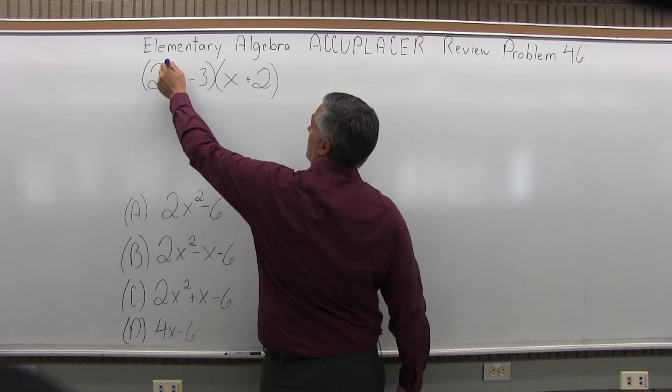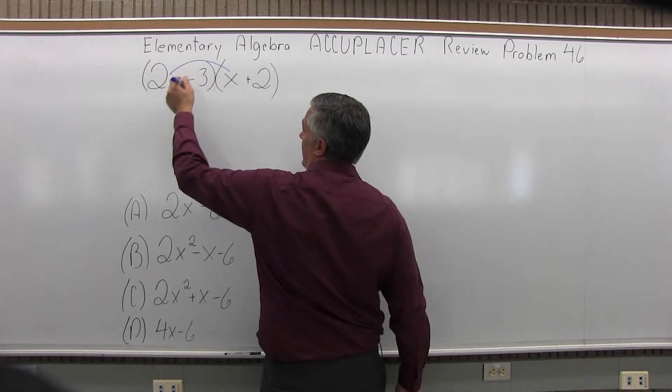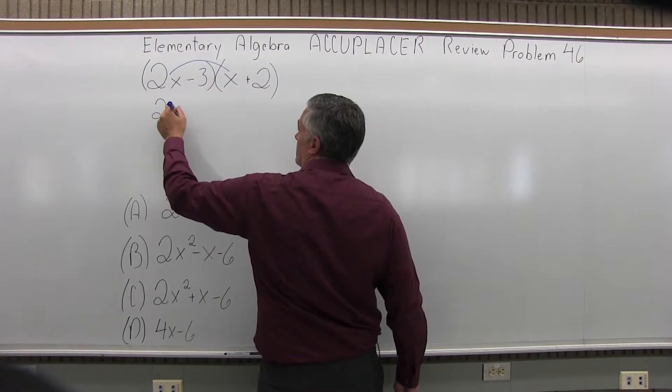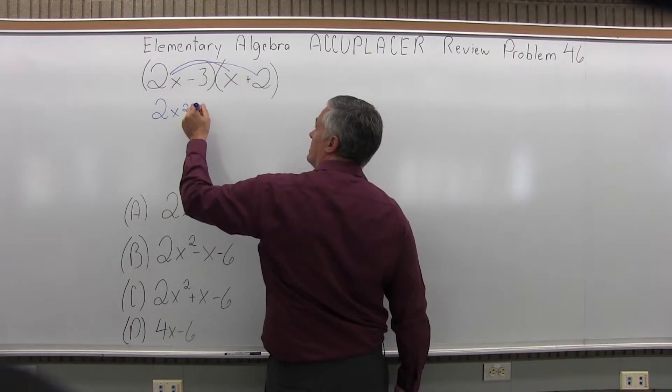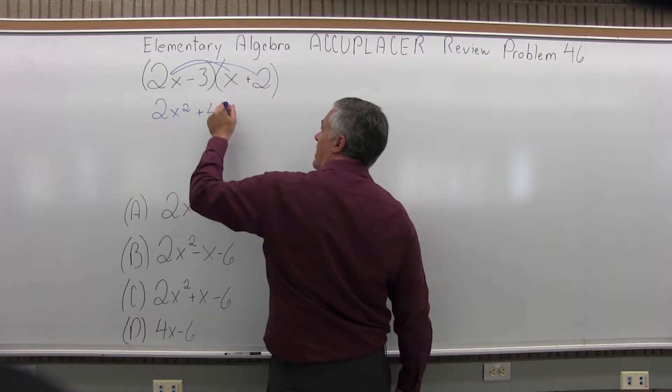So start with 2x times x. That will be 2x squared. And then 2x times 2. That will be 4x.